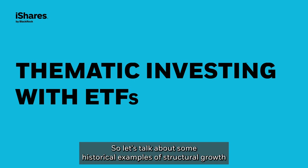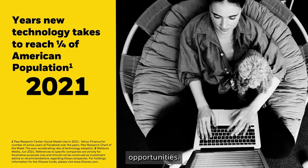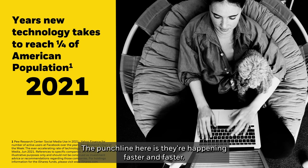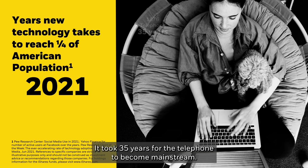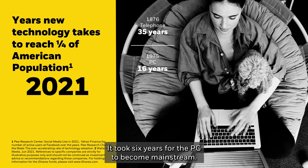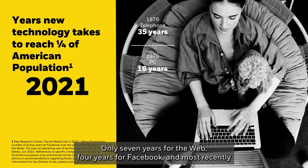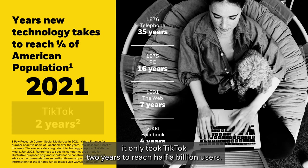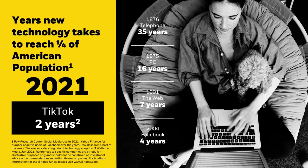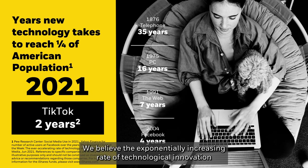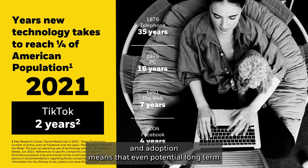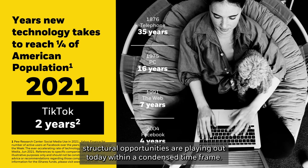Let's talk about some historical examples of structural growth opportunities. The punchline is they're happening faster and faster. It took 35 years for the telephone to become mainstream, 16 years for the PC, only seven years for the web, four years for Facebook, and most recently, it only took TikTok two years to reach half a billion users. We believe the exponentially increasing rate of technological innovation means that even long-term structural opportunities are playing out within a condensed time frame.